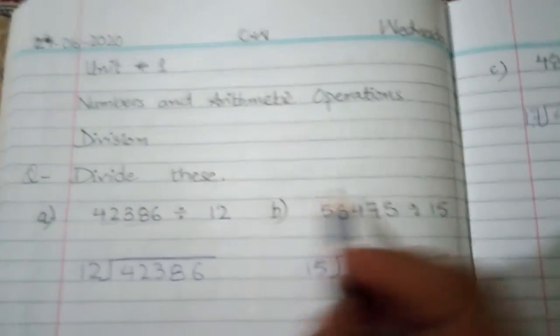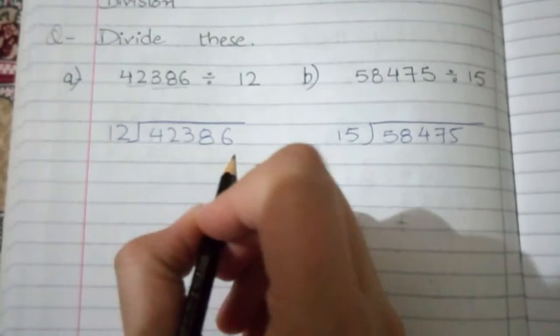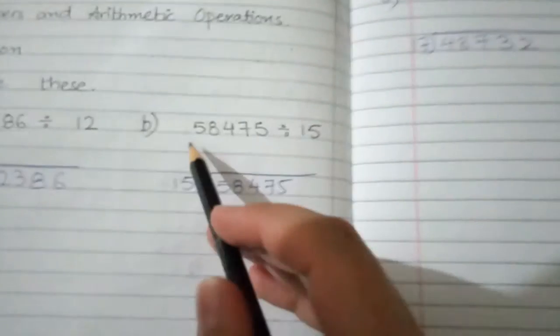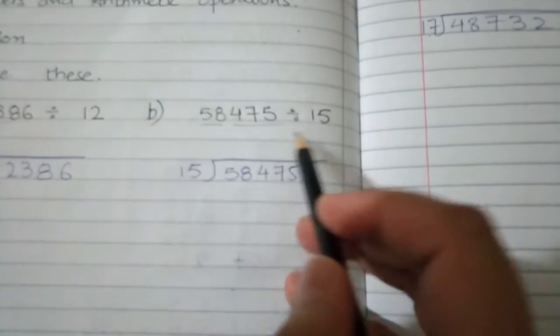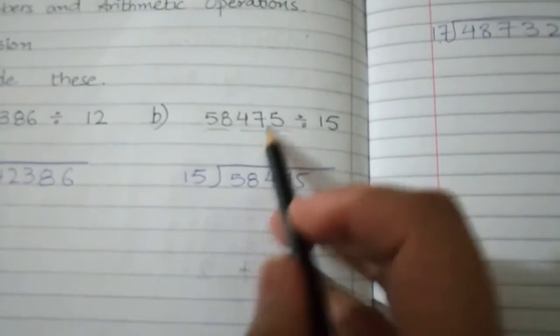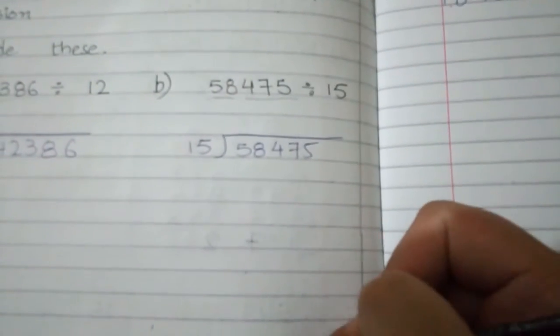Part A: 42,386 divided by 12. You have to write the result. Then the next division: 58,475 divided by 15. You have to write the answer.